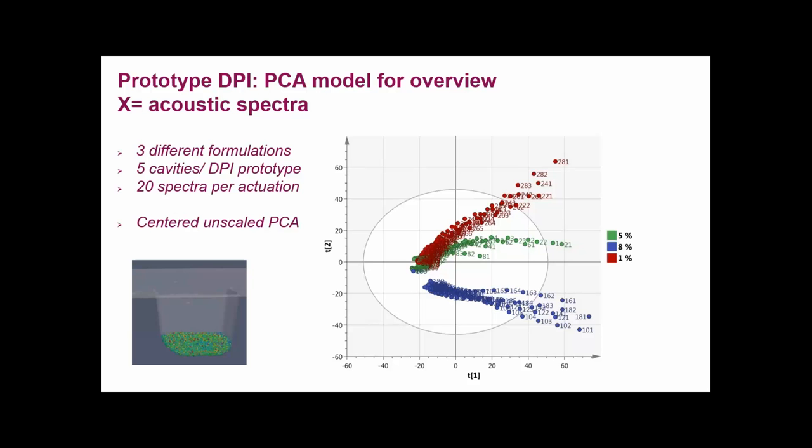And here we have a prototype run. We have three different formulations and we have five runs. That means that we are emptying five cavities for each formulation and we are running 20 spectra per actuation, and we are doing centered unscaled principal component analysis here. You see that we have in those different formulations 5% of the active and 8% of the active or 1% of the active, and the rest is filled up to the same weight by lactose. So this is an ordered mix as it's called. And you can see from this that these tracks are going in different directions for the different formulations.